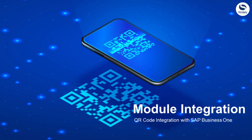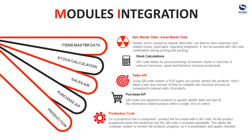Let's take a look at the SAP Business One modules which can be integrated with QR codes so easily. There are five modules. First, item master data — manage your whole inventory and assets. Second, stock calculations — QR codes will reduce man hours and offer a painless experience over such physical processes.